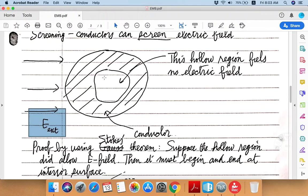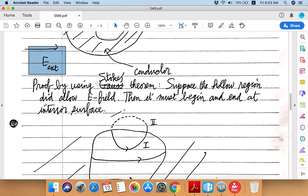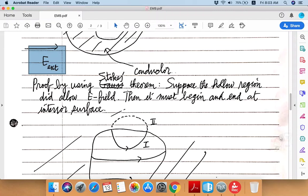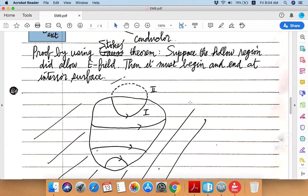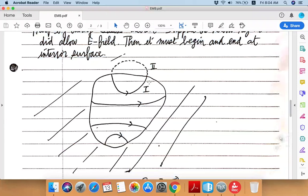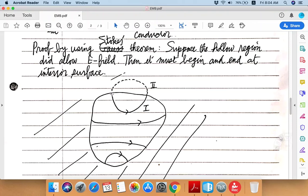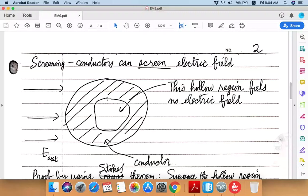Okay, so that was the claim, but how do I prove this to be the case? Well, the proof is quite elegant and it uses Stokes theorem in a pretty clever way. So now let's suppose the contrary. Suppose this hollow region here was in fact permeated with electric field.